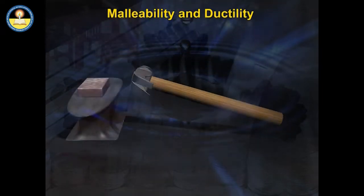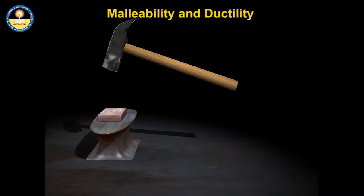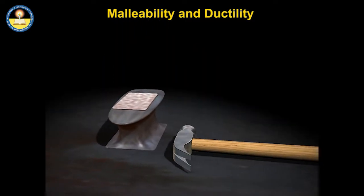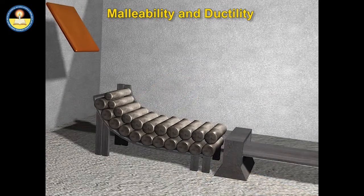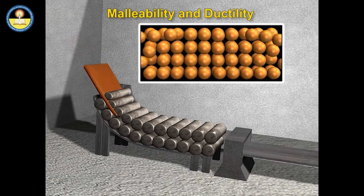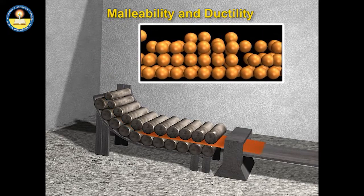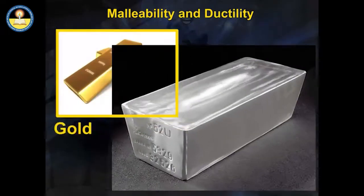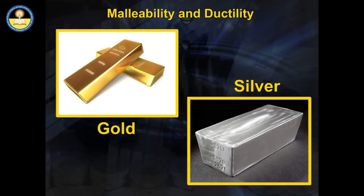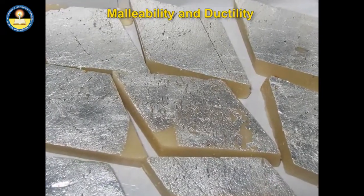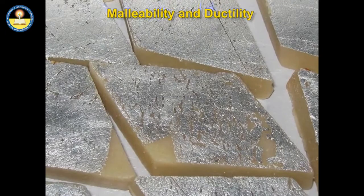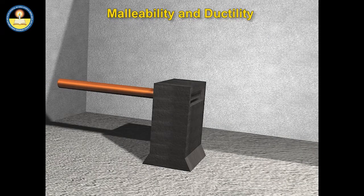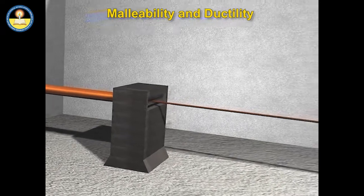Malleability and Ductility. Metals are malleable — they can be hammered or beaten into thin sheets without breaking. Malleable means that metallic bonds in metals do not break easily; they are rearranged to form a new shape. Gold and silver are highly malleable elements. Silver foils are used to decorate sweets. Metals can also be melted and drawn into thin wires. Because of this property, metals are known as ductile.